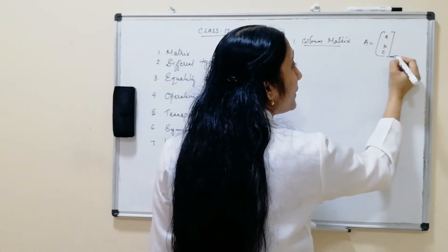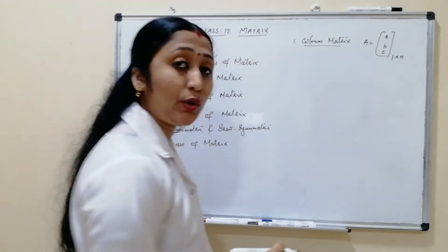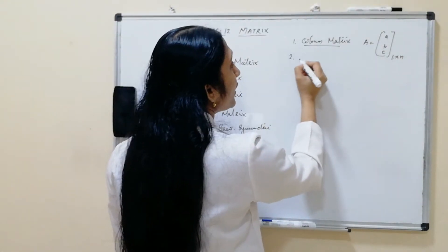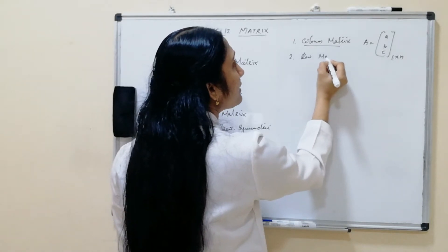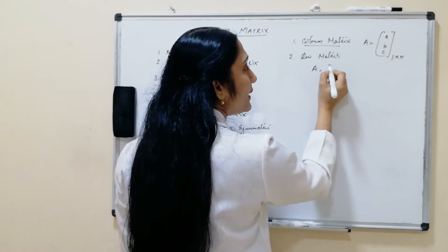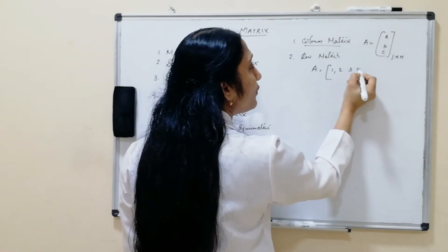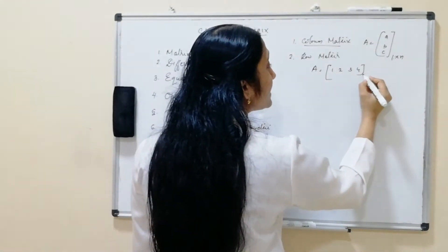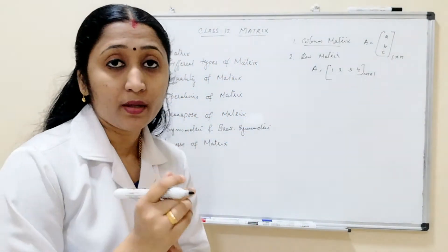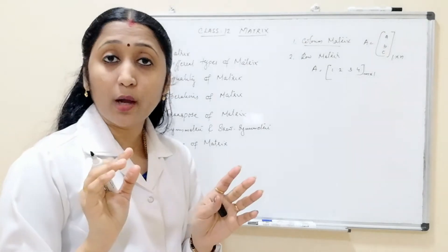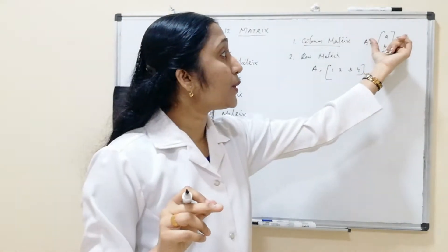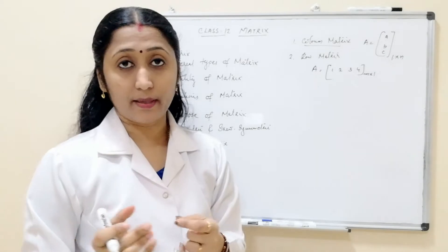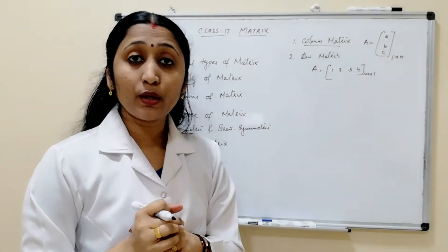The second type is the row matrix. A row matrix, for example A = [1, 2, 3, 4], has only one row. We write its order as 1×n — only one row but it can have many columns. Whereas a column matrix has many rows but only one column. This distinction defines the column matrix and the row matrix.